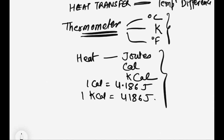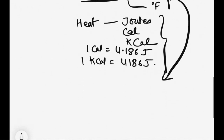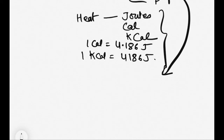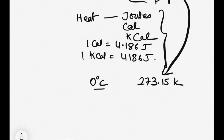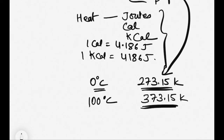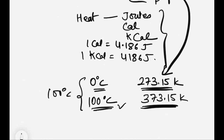There are three different units of temperature measurement. The degree centigrade scale starts from zero degrees, which is the ice melting point. Zero degrees centigrade equals 273.15 Kelvin on the Kelvin scale. Similarly, the boiling point of water is 100 degrees centigrade, equivalent to 373.15 Kelvin. The difference between the two reference points is 100 in both the degree centigrade and Kelvin scales.